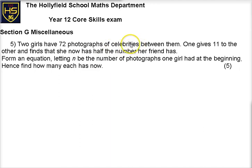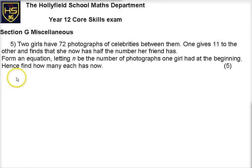Because I love celebrities, I really want to solve this problem. And the only way to solve a problem with celebrities is to use algebra, obviously. So let's keep the blue going. If I call the girls x and y — it says form an equation, letting n be the number of photographs one girl had at the beginning — I'm going to solve it with x and y to start with, and then x is the number that one girl had, and y is the number of photographs that the other girl had.